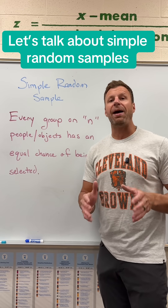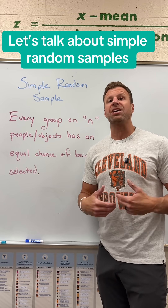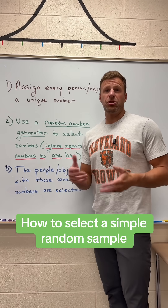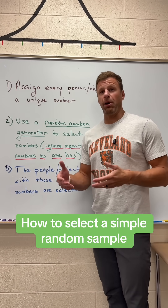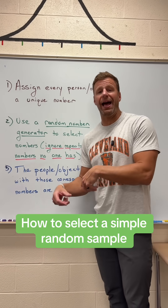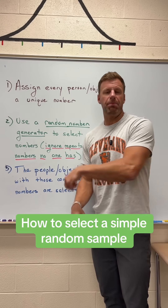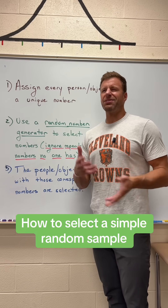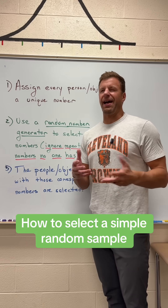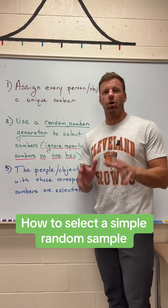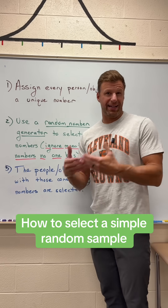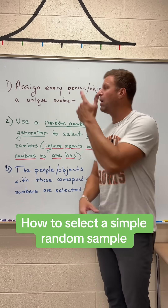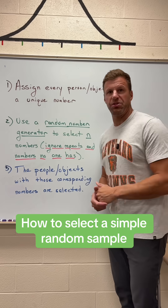Let's talk about the steps to actually get a simple random sample. Now one method is to put everybody's name on a piece of paper, put those pieces of paper in a hat, mix them up, and then draw out 50 pieces of paper. But there are issues with that. What really works best on an exam when asked how would you conduct a simple random sample is following these three steps.